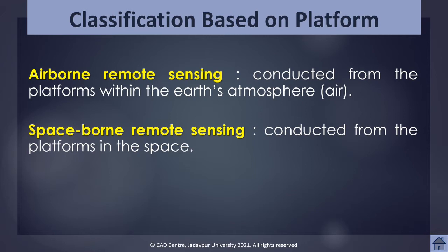Platforms within the air are called aerial or airborne platforms, and platforms in space are called spaceborne or space platforms. Accordingly, remote sensing is also referred to as aerial, airborne, or suborbital remote sensing, and space, spaceborne, or orbital remote sensing.